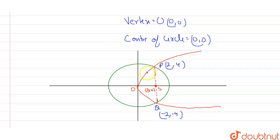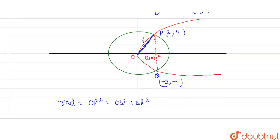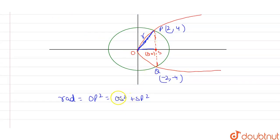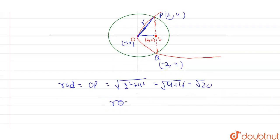Now I need to find the radius of the circle, which is OP — the distance from origin O(0, 0) to point P(2, 4). Using the distance formula: OP = √((2−0)² + (4−0)²) = √(4 + 16) = √20. So the radius is √20.